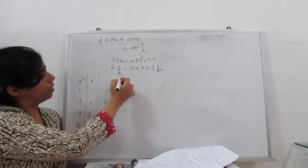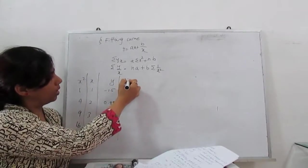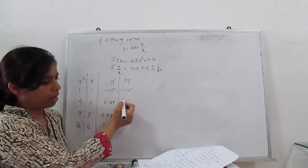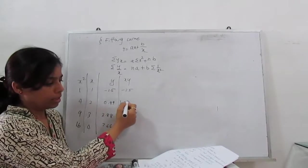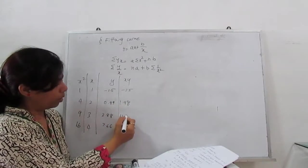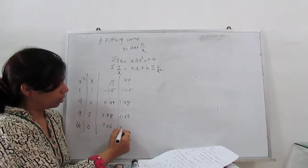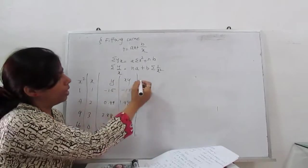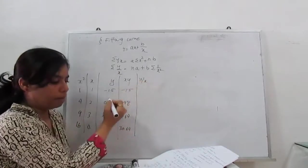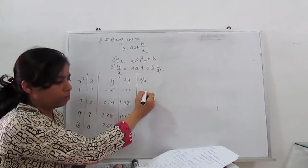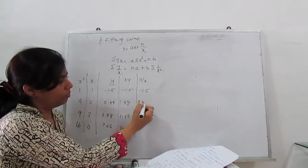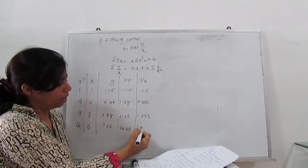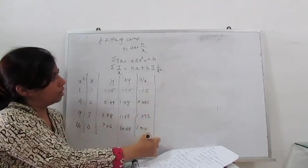Next, I need x into y. So x into y is minus 1.5, 1.98, 11.64, 31.64. Next, I need y by x. Y by x is minus 1.5, 0.495, 1.293, 1.915.